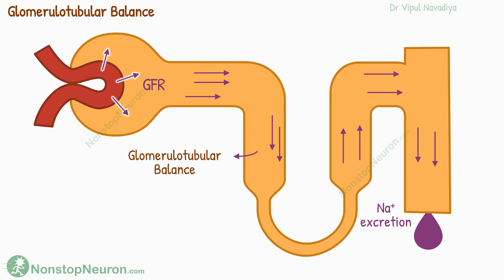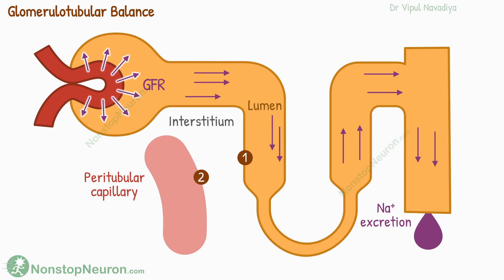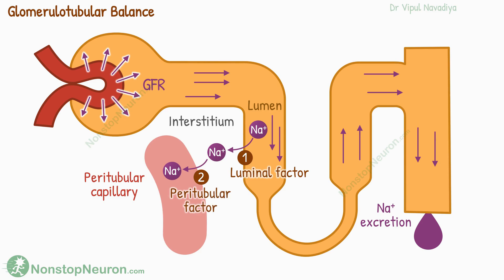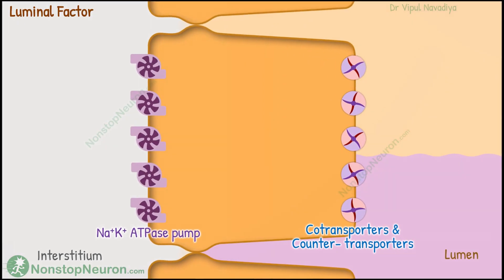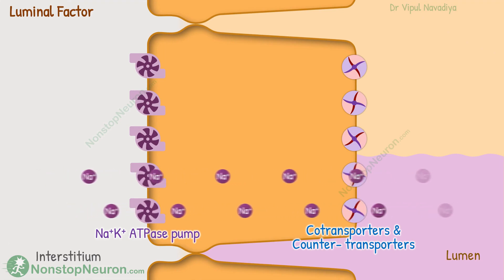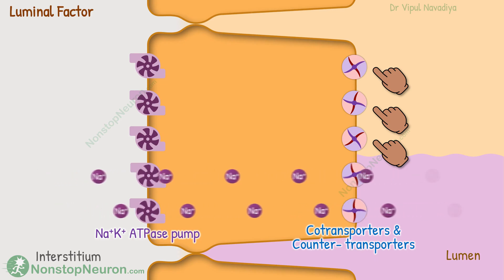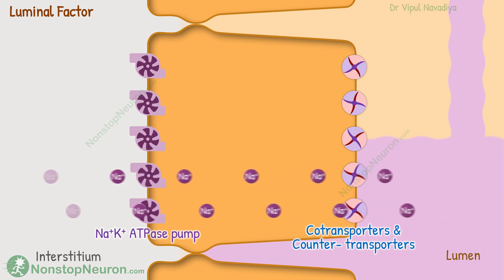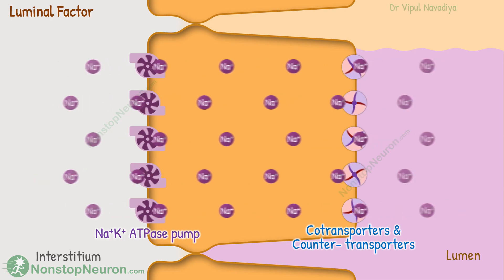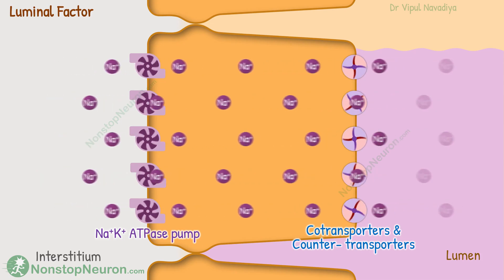Now let's see the exact mechanism. We will see how increased sodium load increases sodium reabsorption. There are two mechanisms involved. The first mechanism, called the luminal factor, increases the movement of sodium from the lumen into the interstitium. In the proximal tubule, sodium is reabsorbed by various cotransporters and countertransporters. We have so many of these that normally not all transporters are active — they are reserved for extra loads. If the load increases due to increased GFR, these reserved transporters also start working, so reabsorption increases.